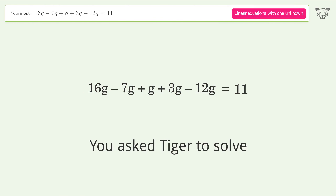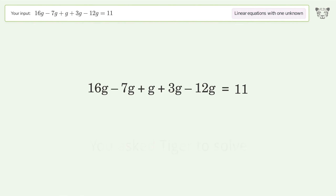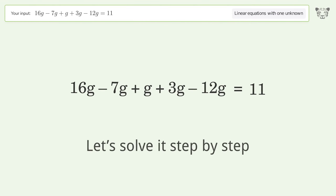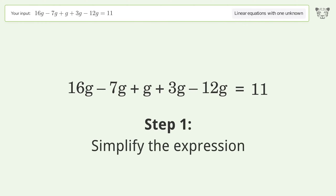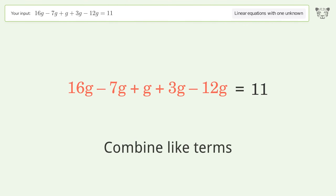You asked Tiger to solve. This deals with linear equations with one unknown. The final result is G equals 11. Let's solve it step by step.